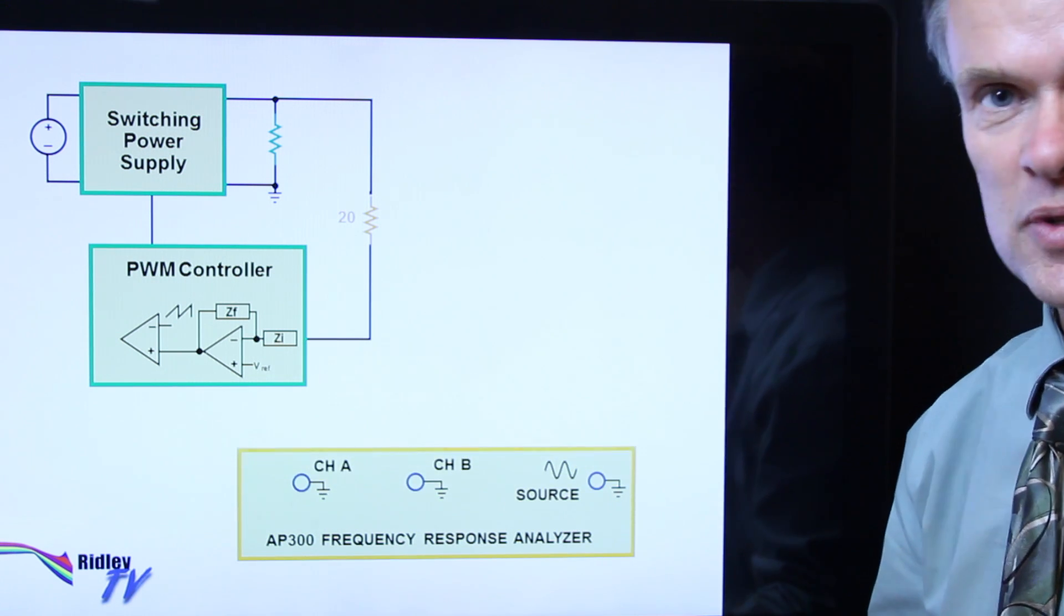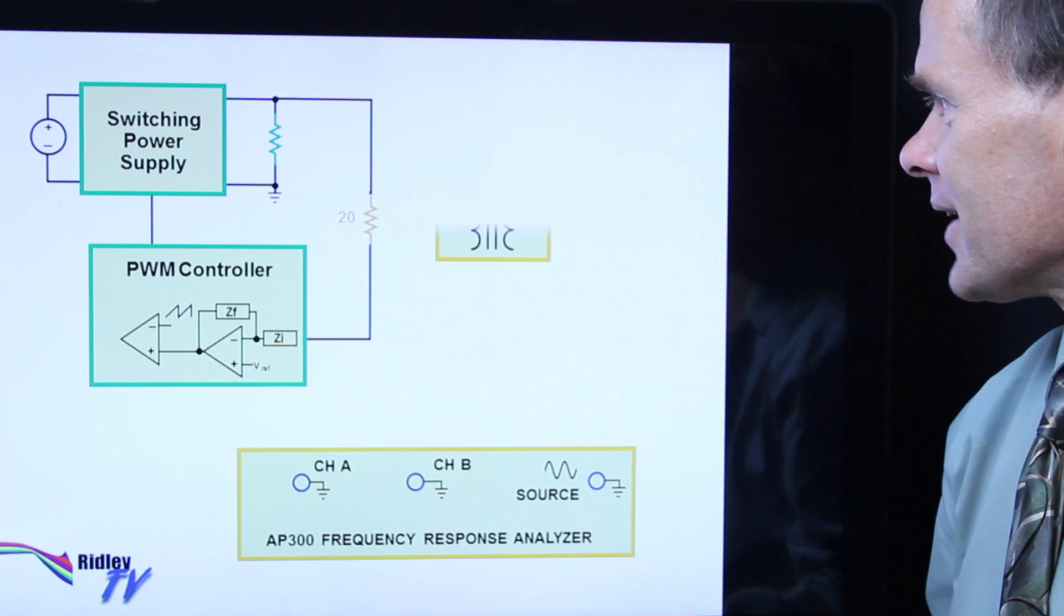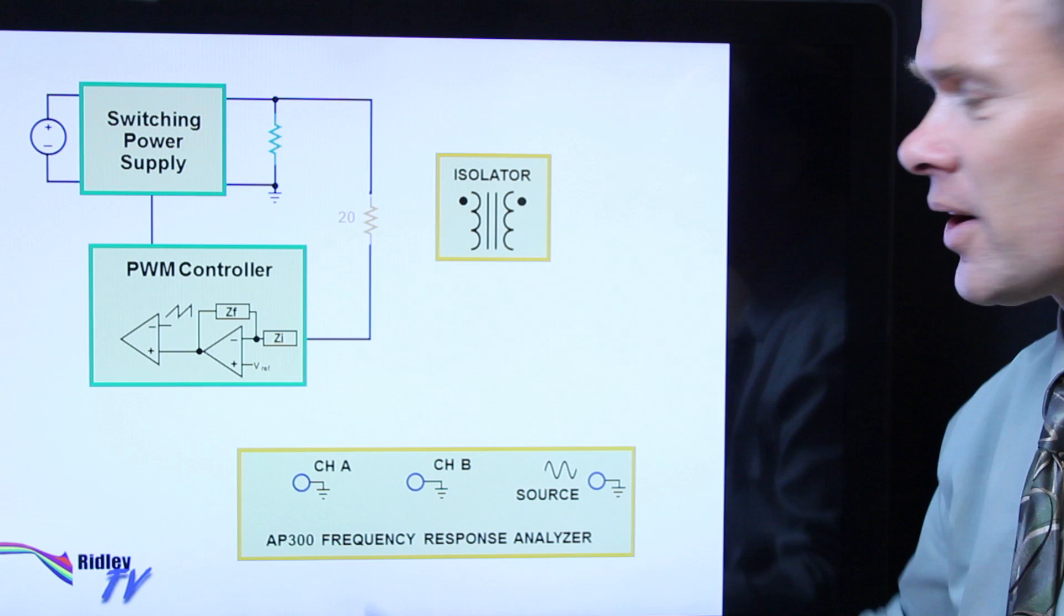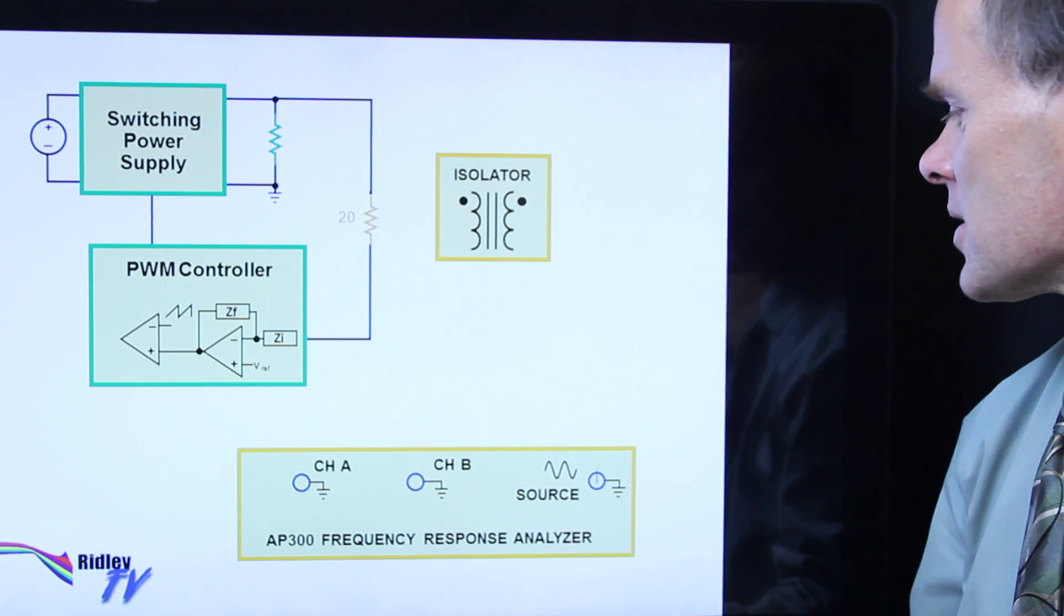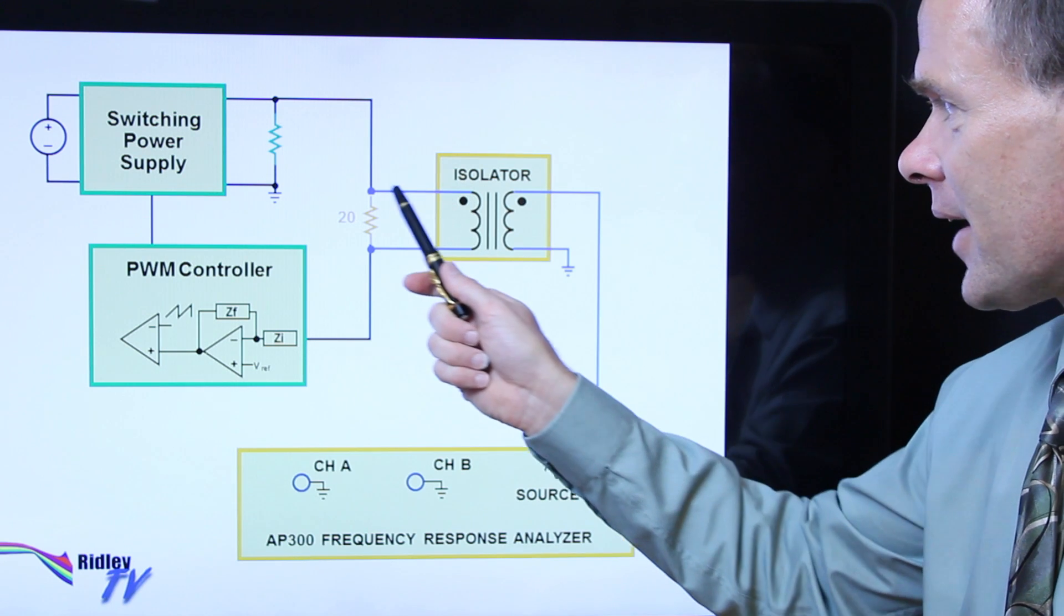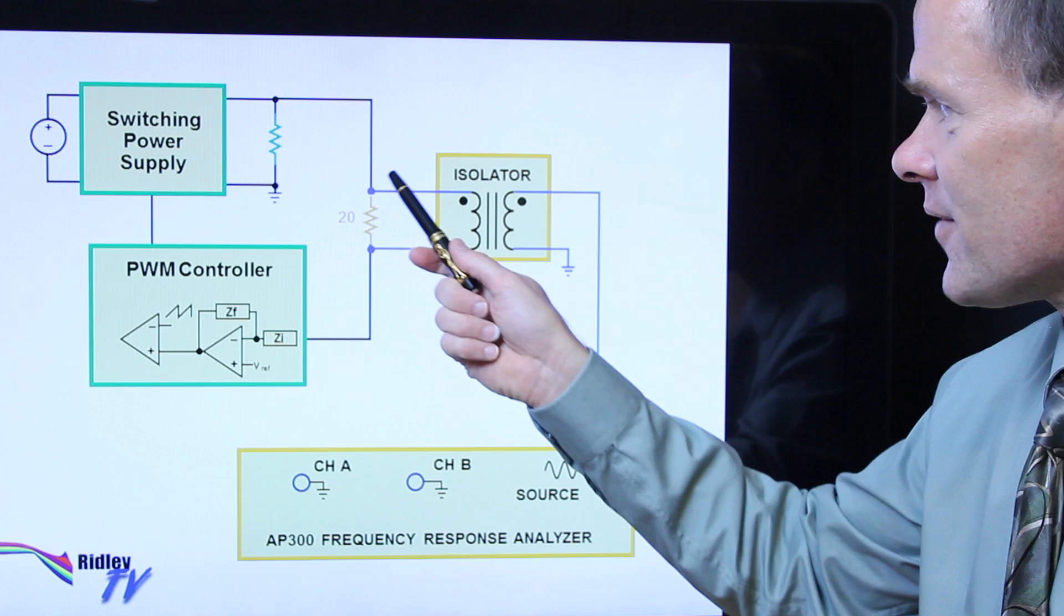So now we add our favorite frequency response analyzer, the AP300, and we need a transformer to take the source and inject it differentially across this resistor. So we take the source signal, put it into the transformer input, and then that comes across the 20 ohm resistor.